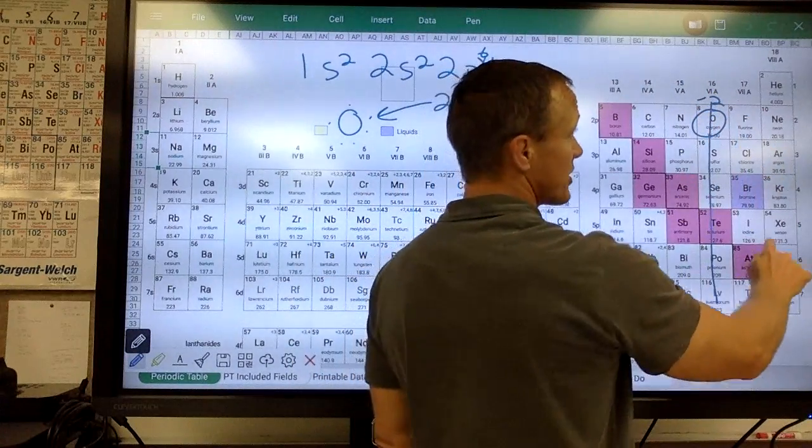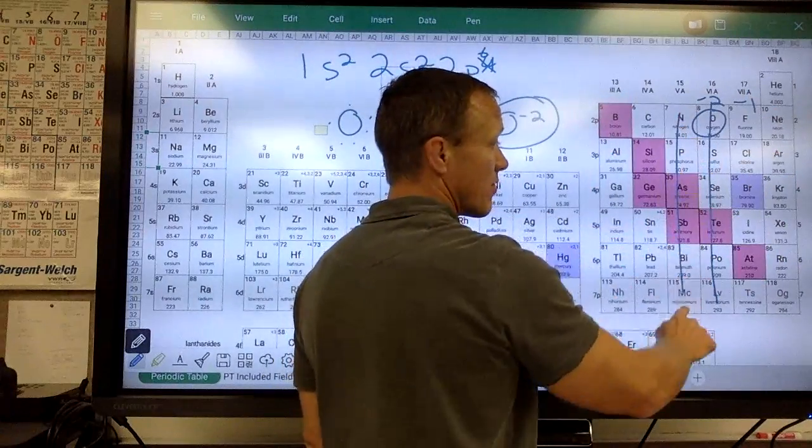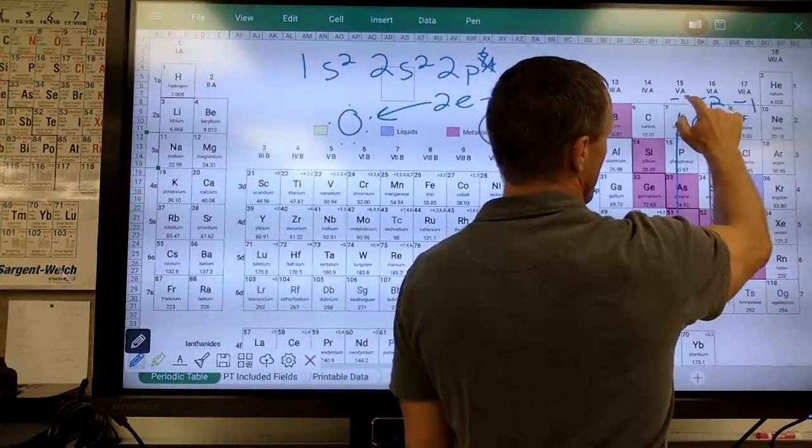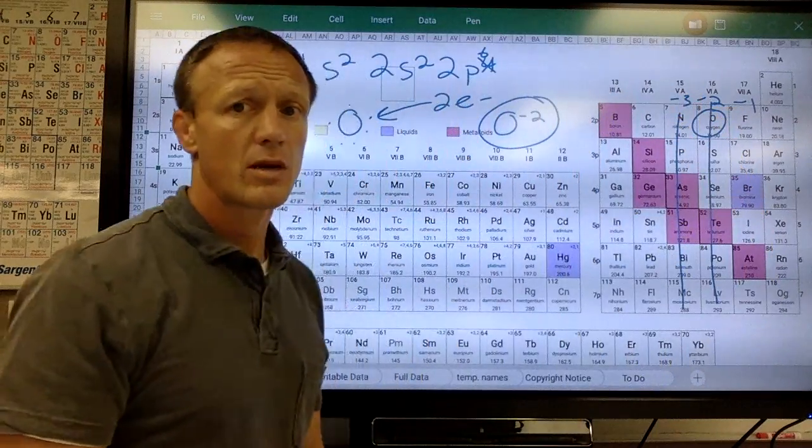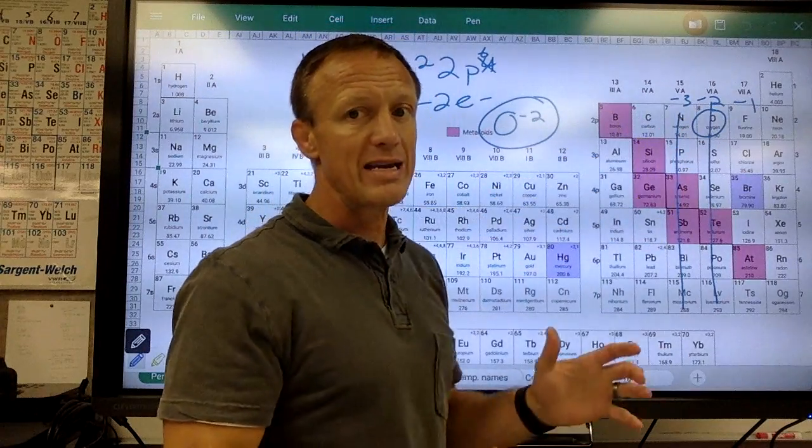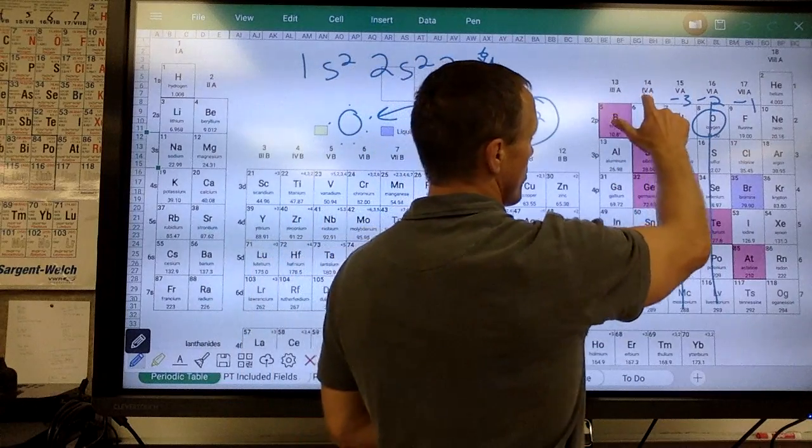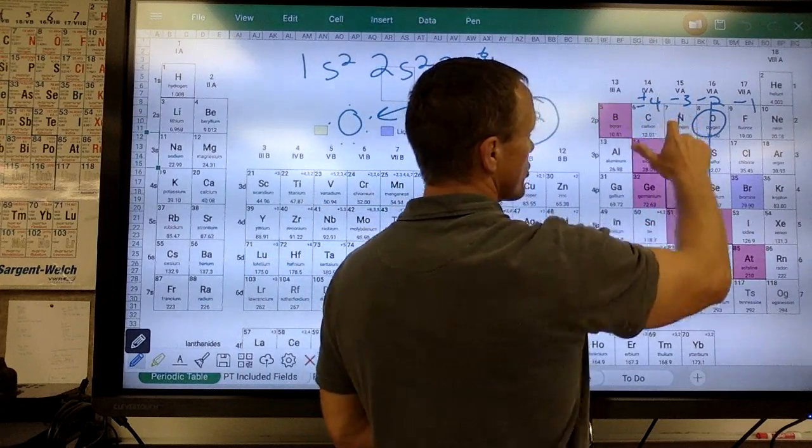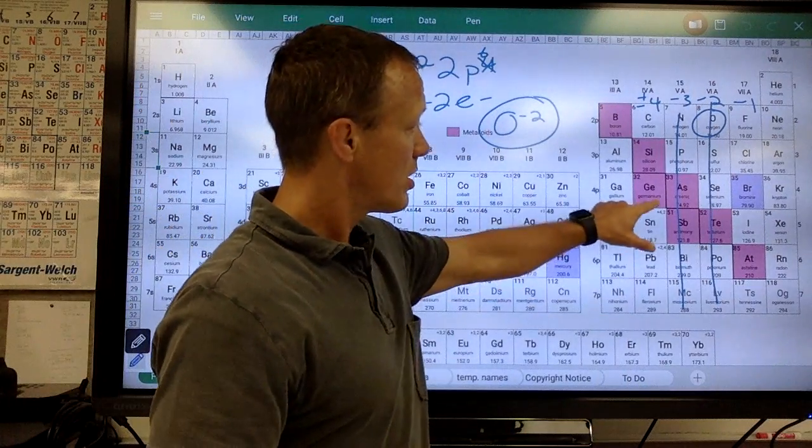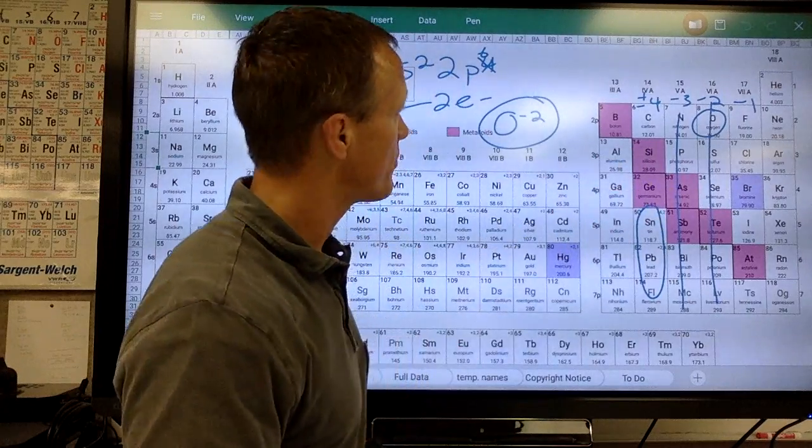These elements with seven valence electrons tend to gain one electron and form a negative one charge. These elements with five valence electrons want to gain three electrons and form a negative three charge. If we look at this family, they have four valence. Now, they can either gain or lose four electrons. So they can form a plus or minus four charge. I would typically tell you the charge on those elements. In general, the elements down here become positive. Those become negative. That kind of changes a little bit.